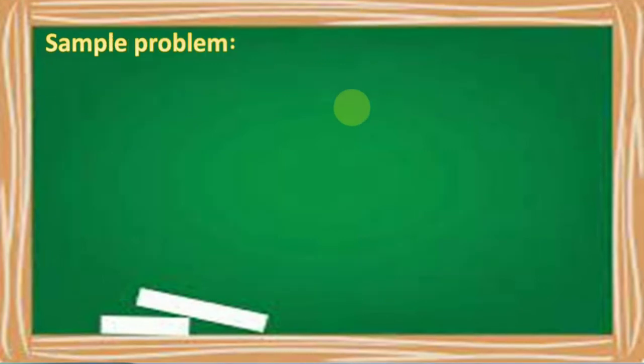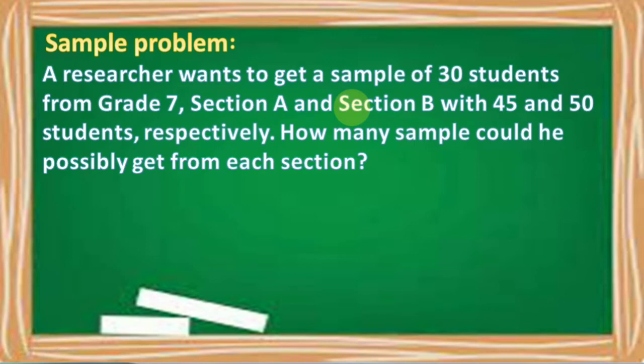Let's have a sample problem. A researcher wants to get a sample of 30 students from grade 7, section A and section B with 45 and 50 students respectively. How many samples could he possibly get from each section?